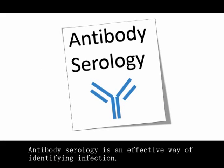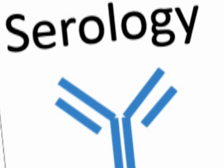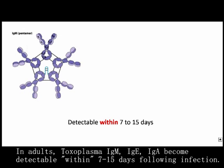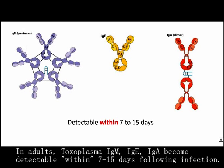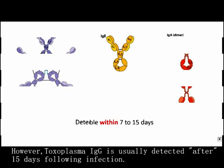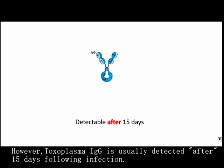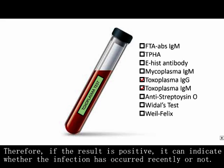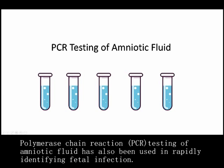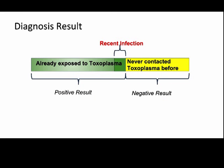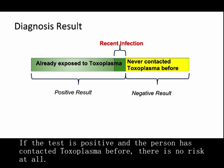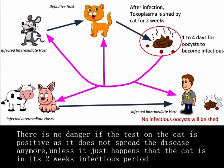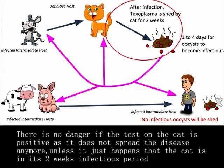Diagnosis of Toxoplasmosis. Antibody serology is an effective way of identifying infection. In adults, Toxoplasma IgM, IgE, and IgA become detectable within 7 to 15 days following infection. However, Toxoplasma IgG is usually detected after 15 days following infection. Therefore, if the result is positive, it can indicate whether the infection has occurred recently or not. Polymerase chain reaction testing of amniotic fluid has also been used in rapidly identifying fetal infection. If the test is positive and the person has had prior contact with Toxoplasma, there is no risk at all. There is no danger if the test on the cat is positive, as it does not spread the disease anymore, unless the cat happens to be in its 2-week infectious period. If both the person and the cat test negative, there is a chance of getting infection later.